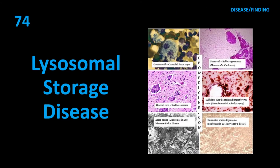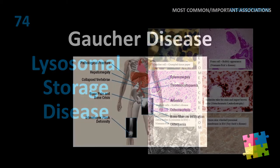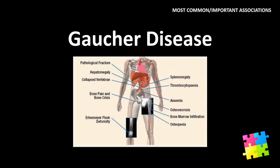Item 73: Most common cause of liver disease — alcoholic cirrhosis. Item 74: Most common lysosomal storage disease — Gaucher disease.